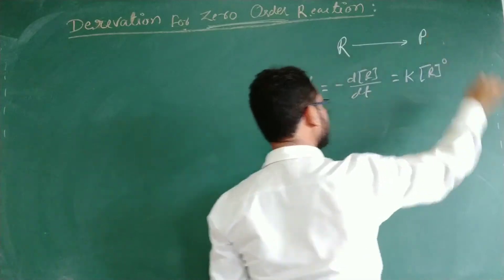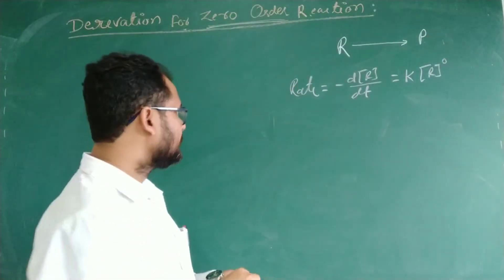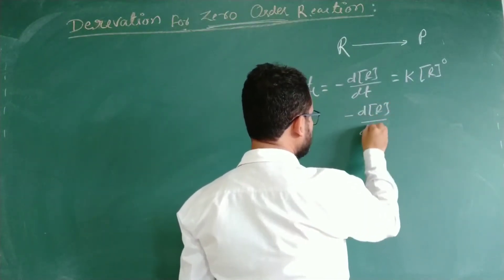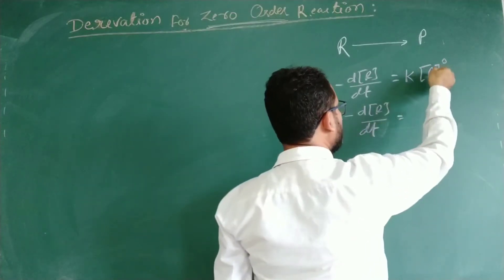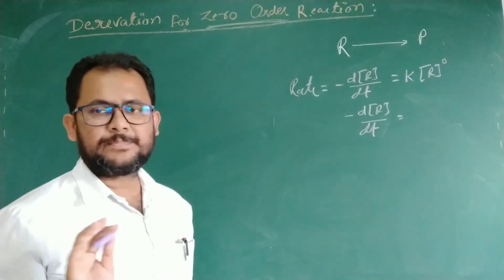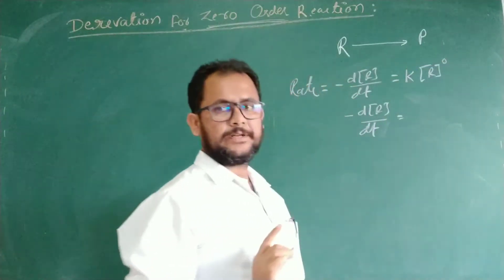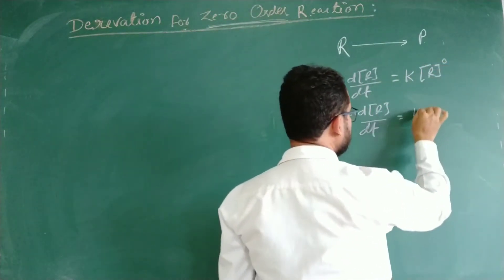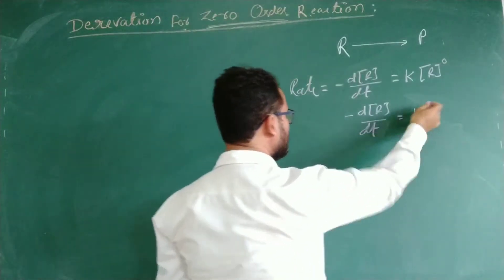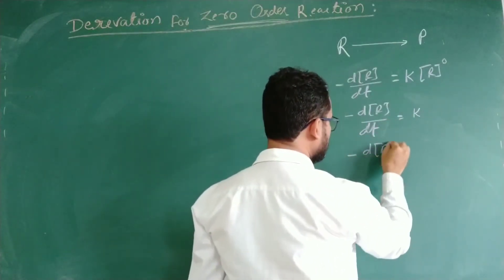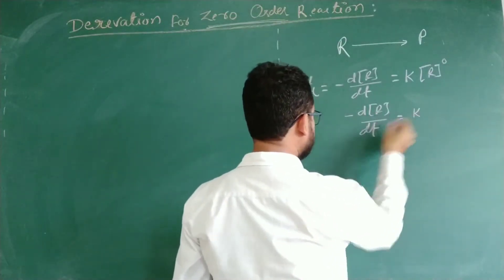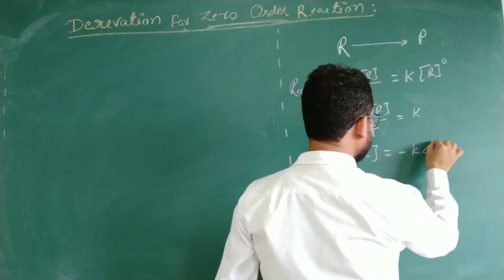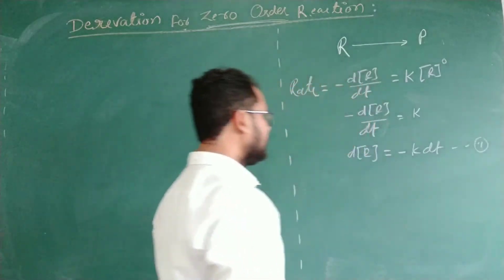Our reaction order is zero. So here, minus dR upon dt, and R raised to power zero equals one. So we have only k. If we cross multiply, minus dR equals minus k dt. This is equation number 1.